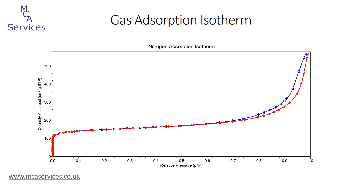The most common adsorbate is nitrogen, and nitrogen is adsorbed at 77 Kelvin — so liquid nitrogen temperature. In this case we're actually referring to the adsorption of the liquid phase rather than the gaseous phase.